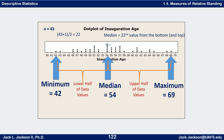Counting up from the bottom to the 22nd dot confirms the median is at the value 54. Counting 22 from the top also lands on that same dot at 54. So the median is 54. The lower half — all data values below that circled dot, including other 54s in the lower group — is 21 data values, and all values from 55 upward form the upper half, also 21 values.